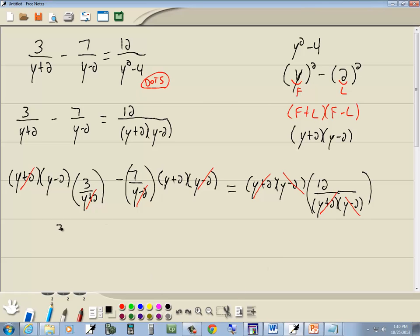So we'll write down what I have left before I multiply it together. I've got 3 times y minus 2 minus 7 times y plus 2 is equal to 12. 3 times y is 3y, 3 times negative 2 is negative 6. Negative 7 times y is negative 7y. Negative 7 times 2 is negative 14. It's equal to 12.